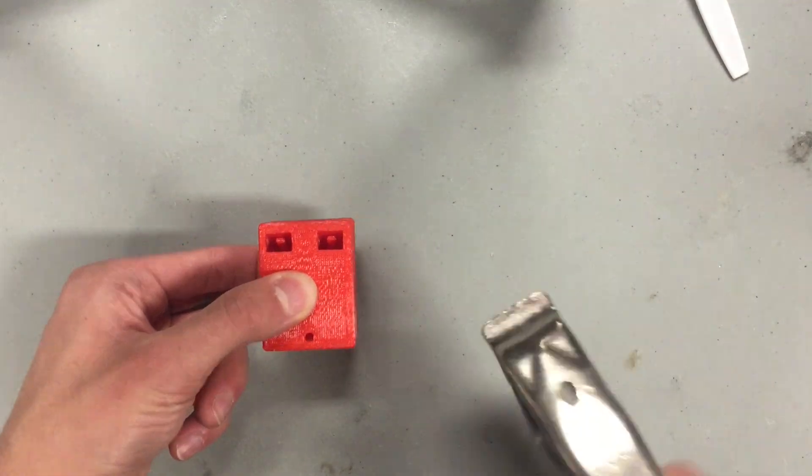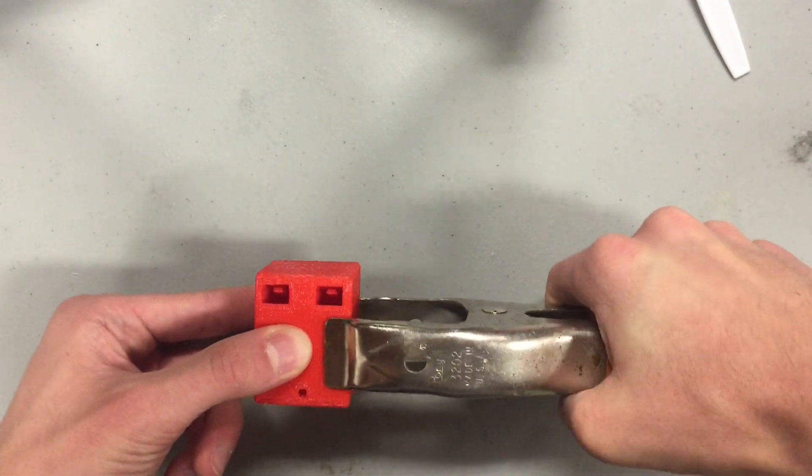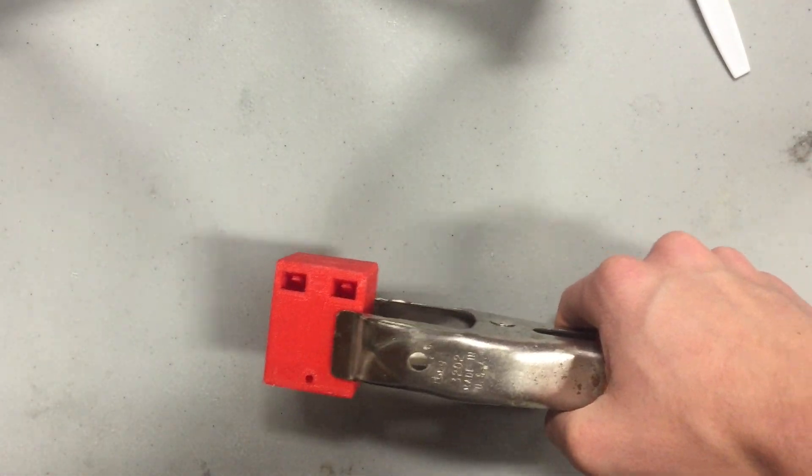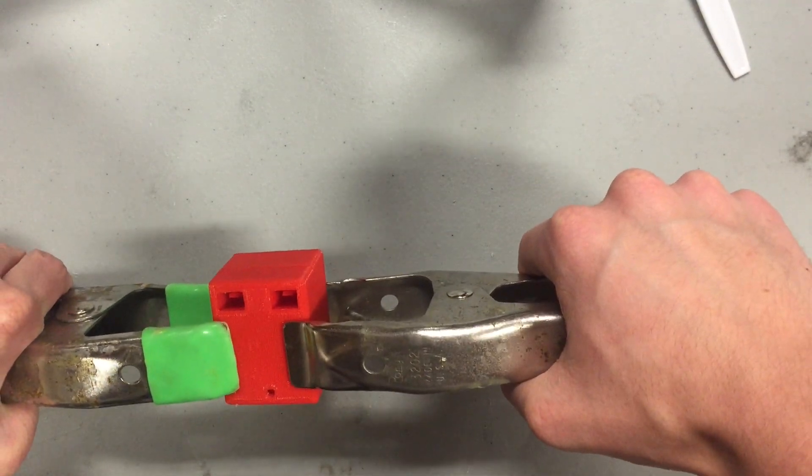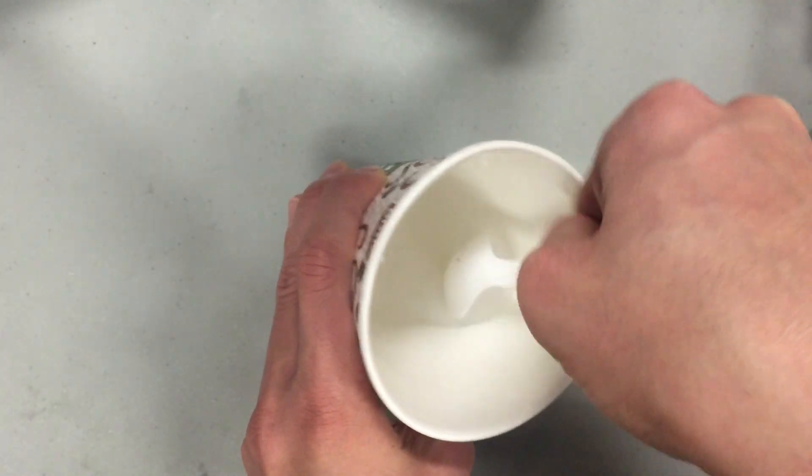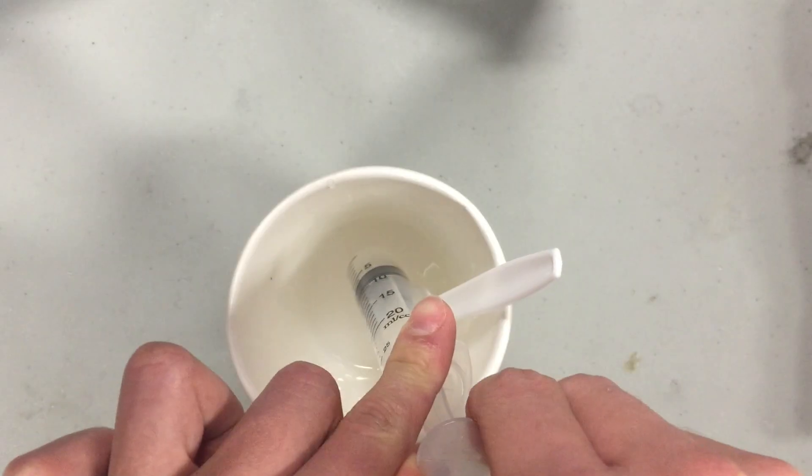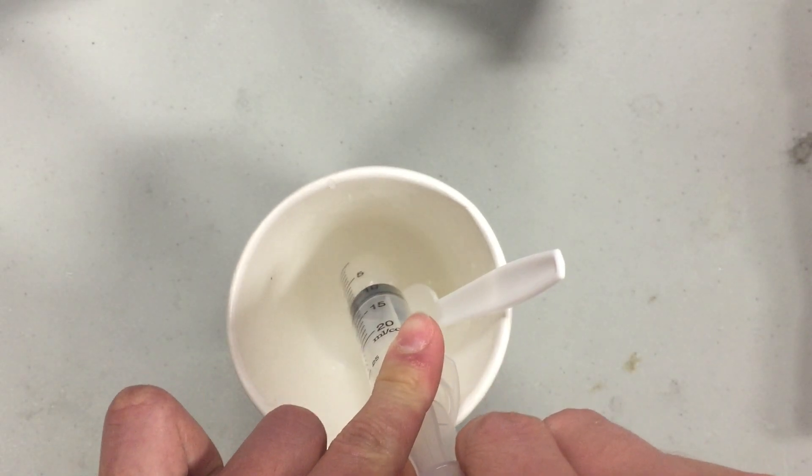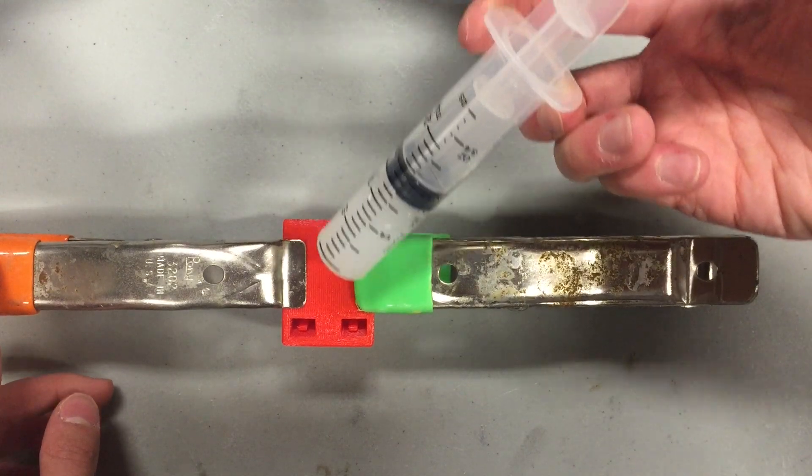Start by connecting the two pieces of the mold and clamping it from either side. Then, mix up a small amount of silicone. Take in the silicone with the syringe and inject it into all of the openings of the mold until it's filled up.